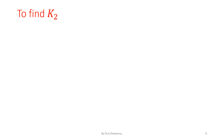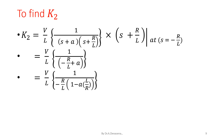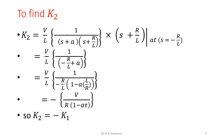Now we determine the value of K2. Multiply by (S + R/L) and substitute S = −R/L: K2 = (V/L) · 1/(−R/L + a) = (V/L) · 1/[(R/L)(−1 + aL/R)] = −V/[R·(1 − aτ)]. Therefore, K2 = −K1.